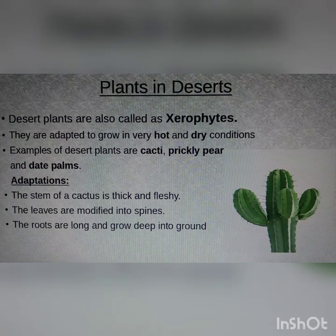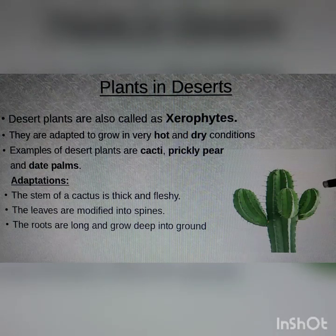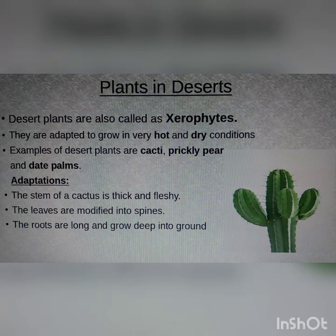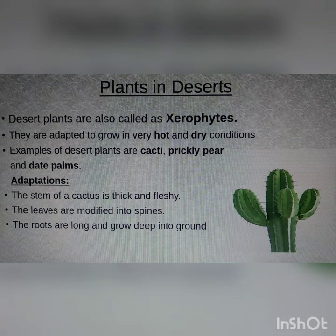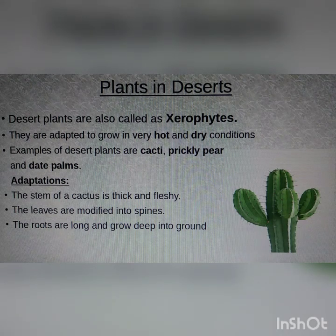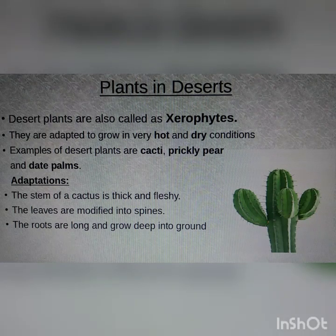The second adaptation is about the leaves. Can you see any leaves here? No. Instead you can see some spine-like structures. So the leaves are modified into spines in cactus. The purpose is to avoid water loss which takes place due to transpiration. Coming to the roots of these plants, they are very long and go very deep into the ground.